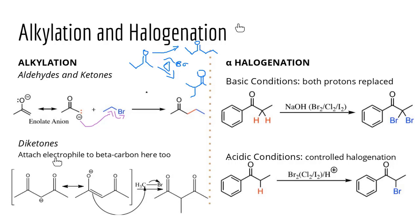Beta-diketones are also very important molecules. The alpha carbon between the two carbonyls is strongly acidic due to both adjacent carbonyls. Because of this, it acts as a strong nucleophile and undergoes the same substitution reaction.